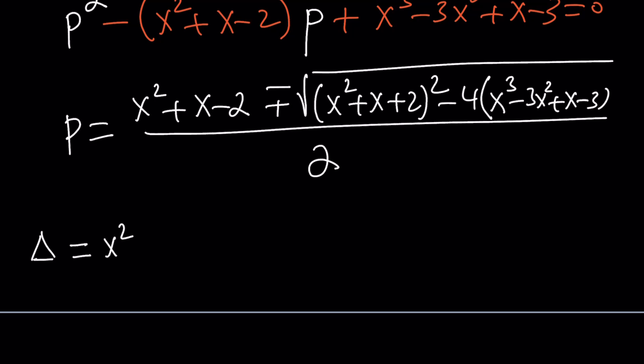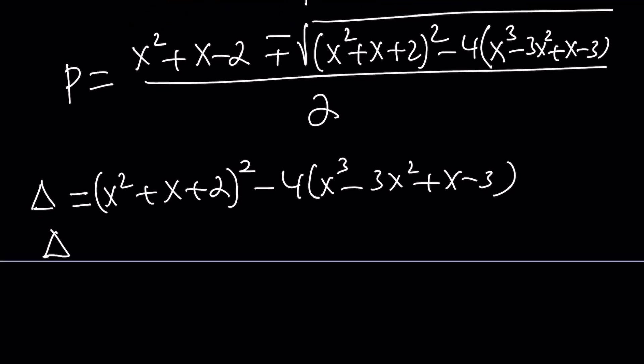So here's my discriminant - let's see how I can simplify it. I'm going to square a plus b plus c. As you know, it's x⁴ + x² + 4, and now we're going to do the 2ab, 2ac and 2bc: 2x³ + 2, 4x² + 4x, right?